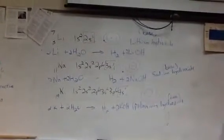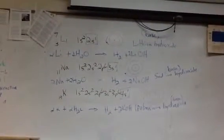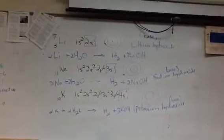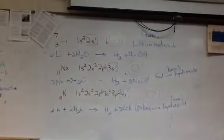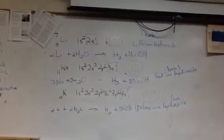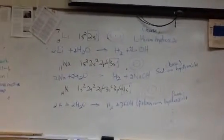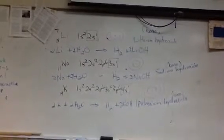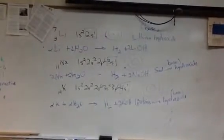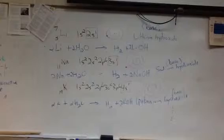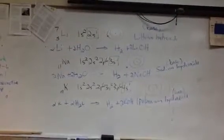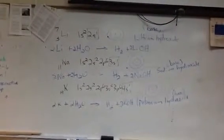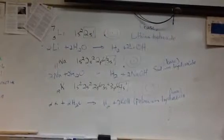3s1. And then further down, potassium, atomic number 19, electron configuration 1s2, 2s2, 2p6, 3s2, 3p6, and 4s1. You can notice all of these elements have as their last electron an s orbital that that one electron is in. So it's 2s, 3s, and 4s1, respectively.